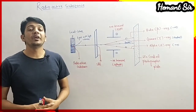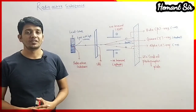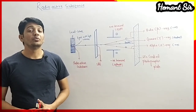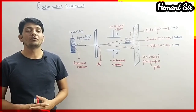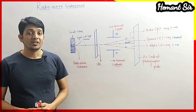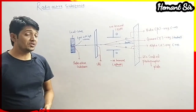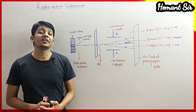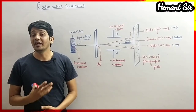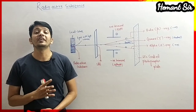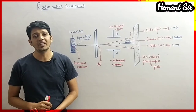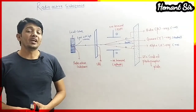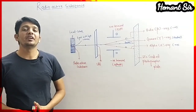Students, here we have completed today's session. In the next video, we are going to continue with the uses of radioactive substances. Radioactive substances can be used in two ways: one is by using the radiation, and another is by using the radioactive metal itself. We will discuss radioactive materials and their uses in our next video.